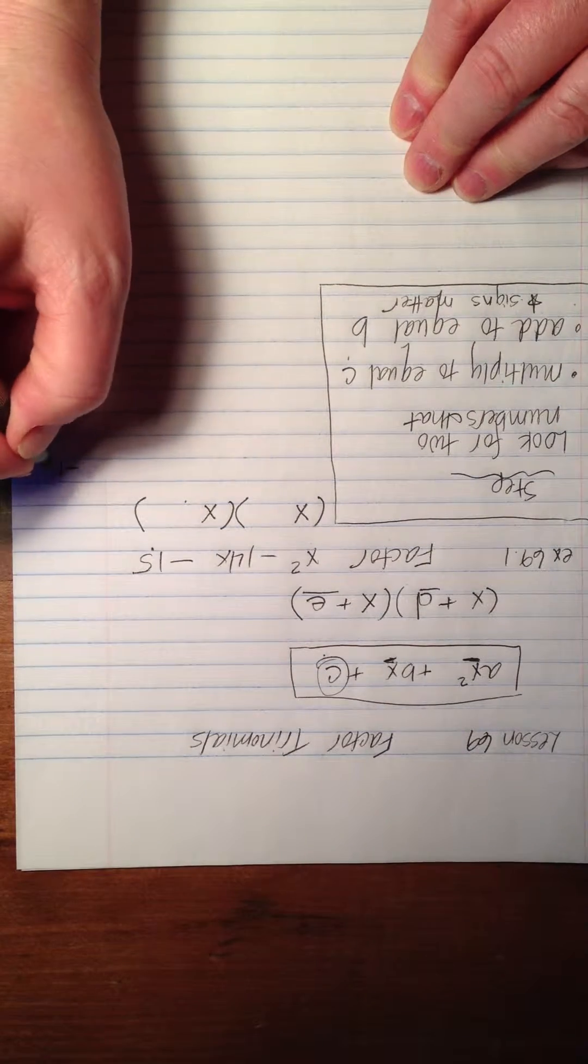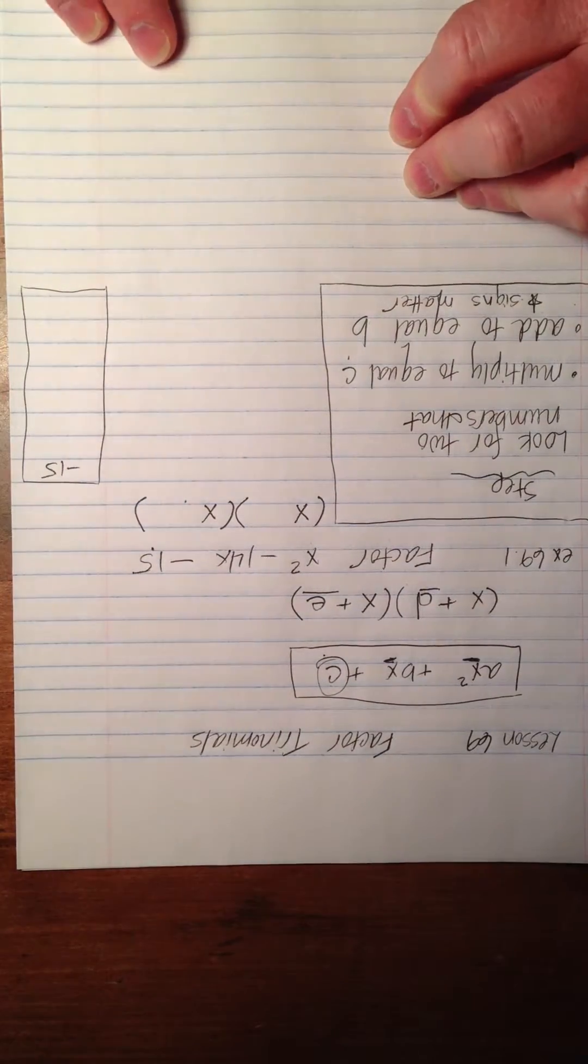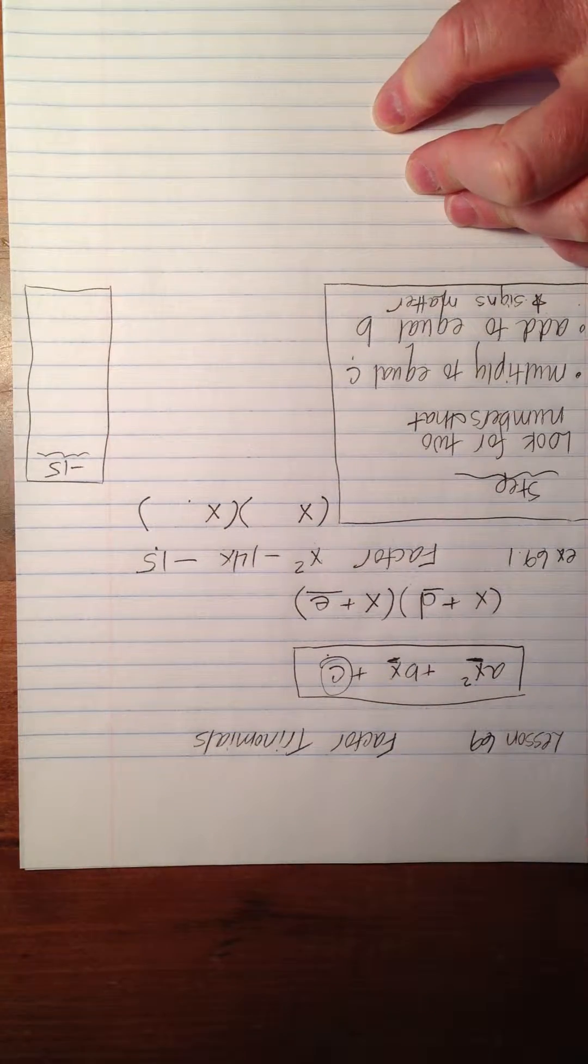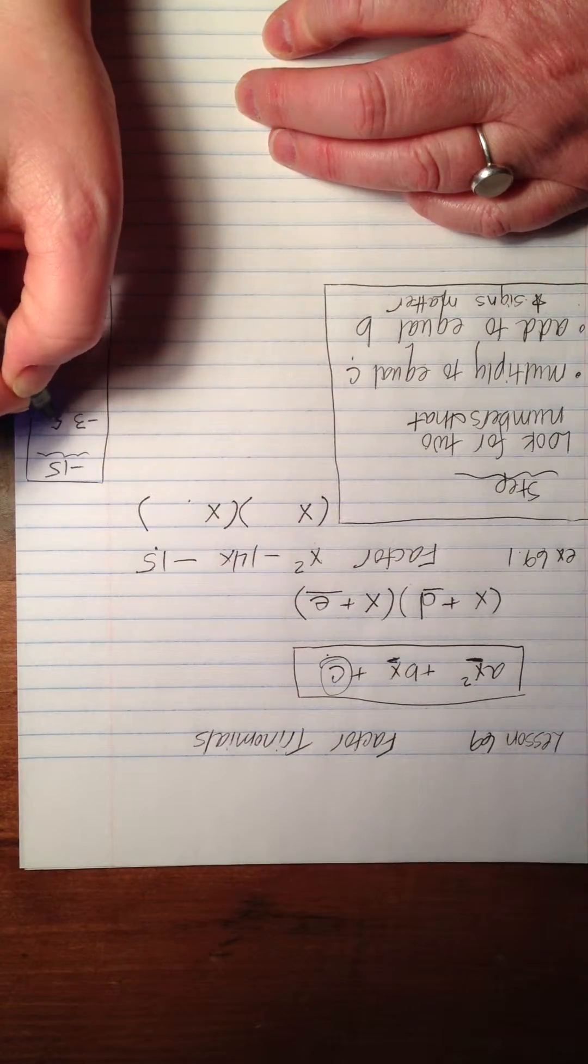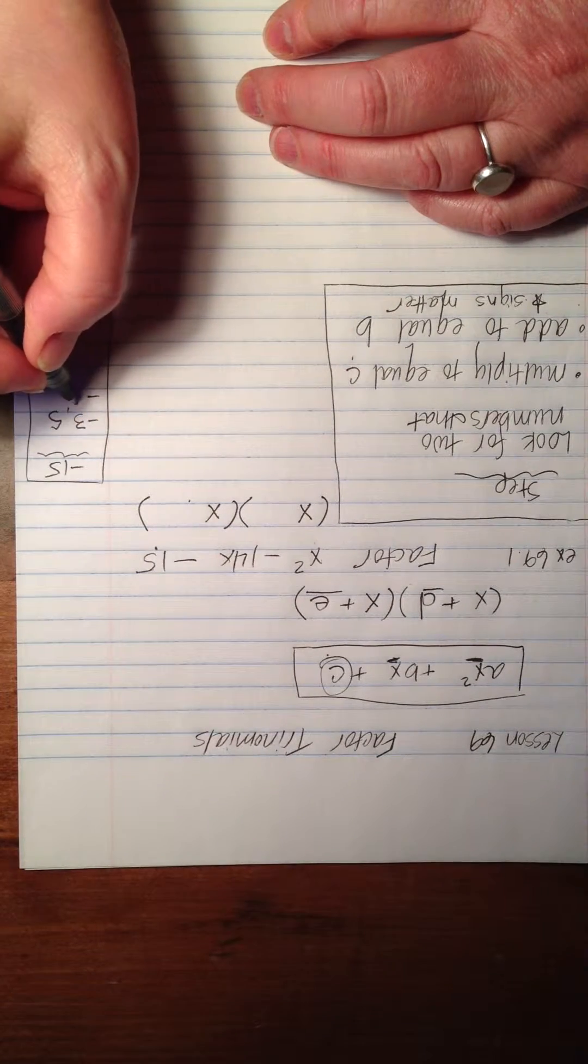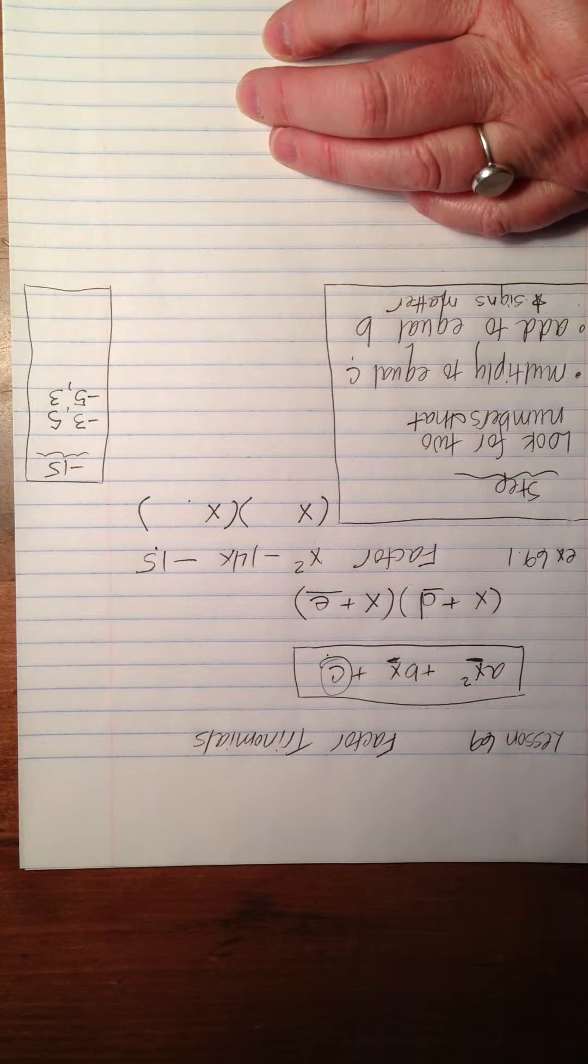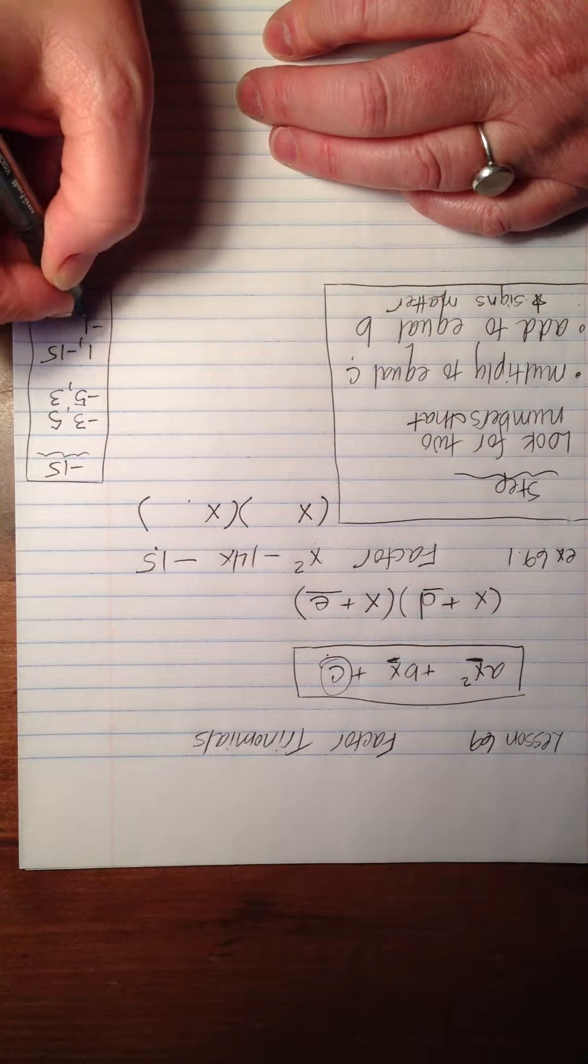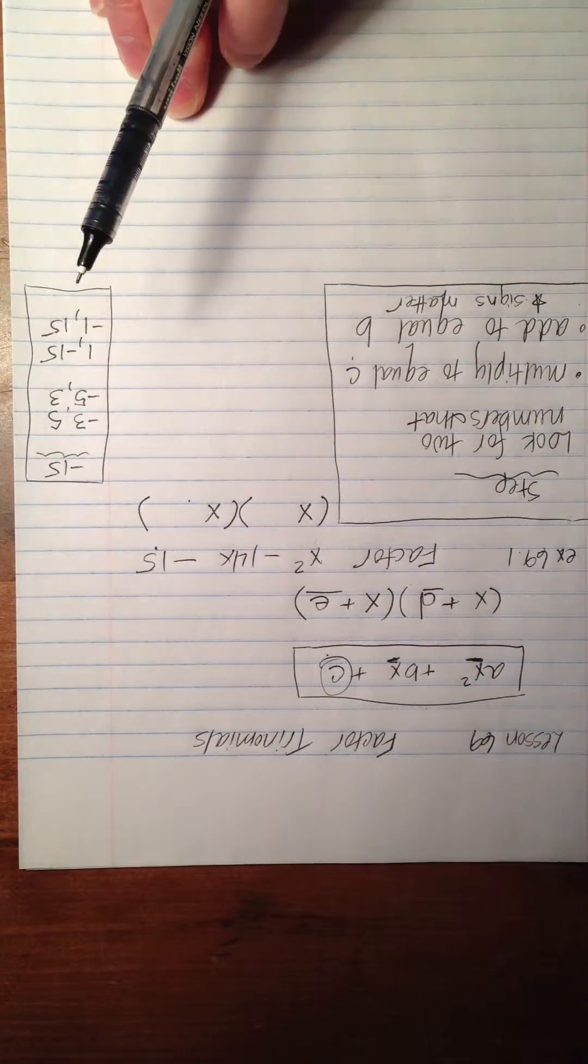We start by listing pairs of numbers that will multiply to equal -15. So what are some numbers that multiply to equal -15? How about -3 and 5? Yes, that's right. Those are two numbers that multiply to equal -15. How about also -5 and positive 3? That would work too. And then the only other pair of numbers would be 1 and -15, or -1 and positive 15. Those are the only numbers that will multiply to equal -15.